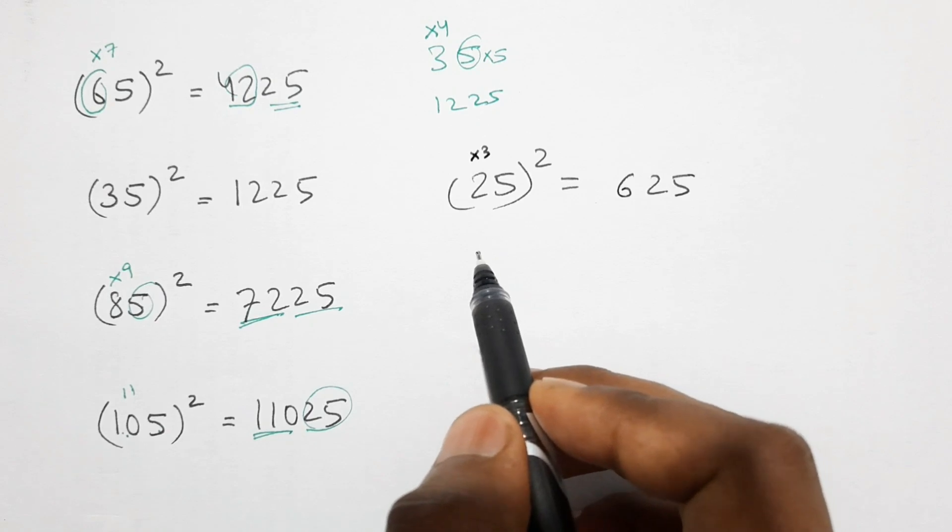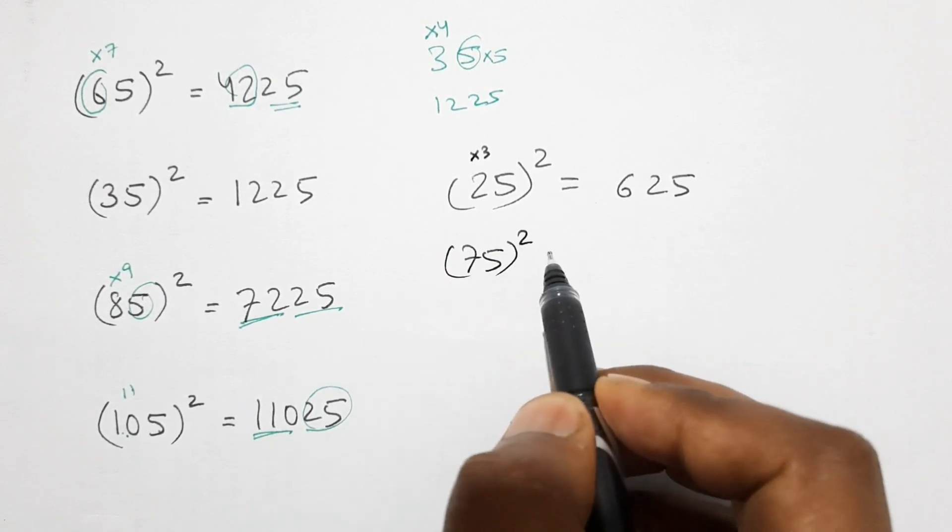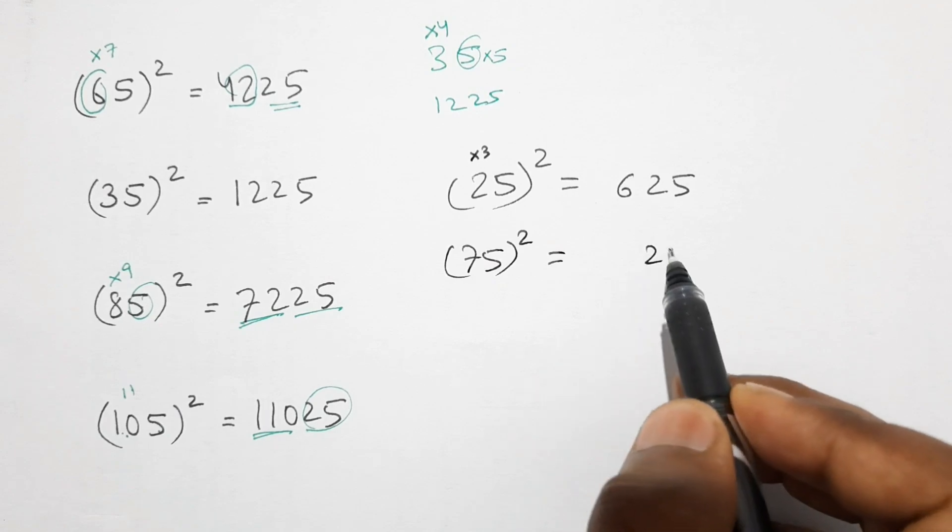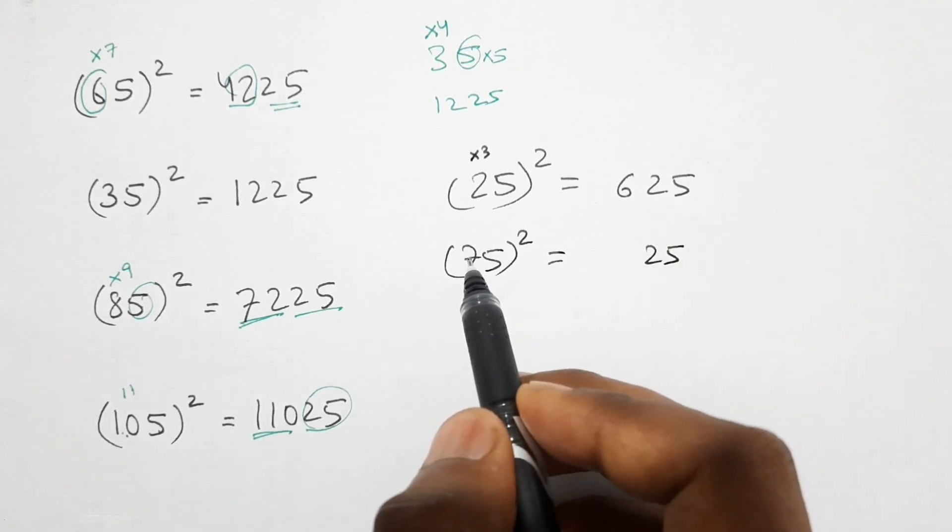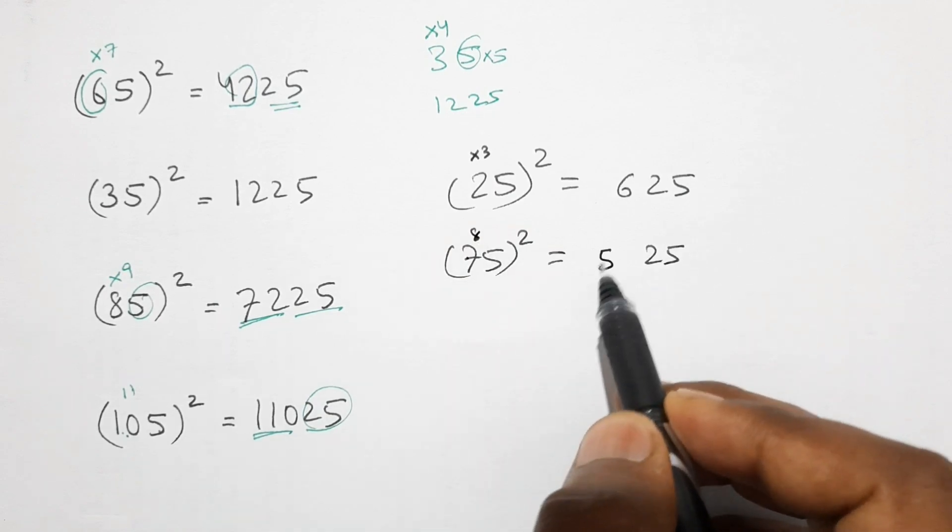Similarly, let's take another example, 75 square. So first 5 square is 25 and 1 more than 7 is 8, so 7 times 8 equals 56.